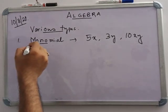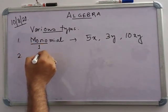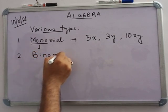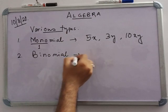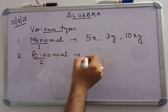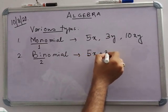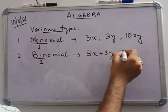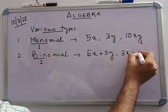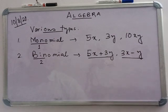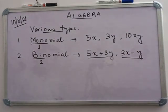Number two is binomial. Bi means two. That means when two expressions are there — suppose 5x plus 3y, or 3x minus y — when two terms are there using plus or minus, then this is called a binomial.